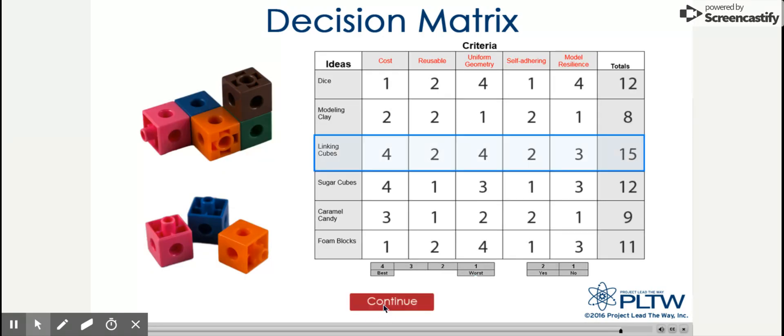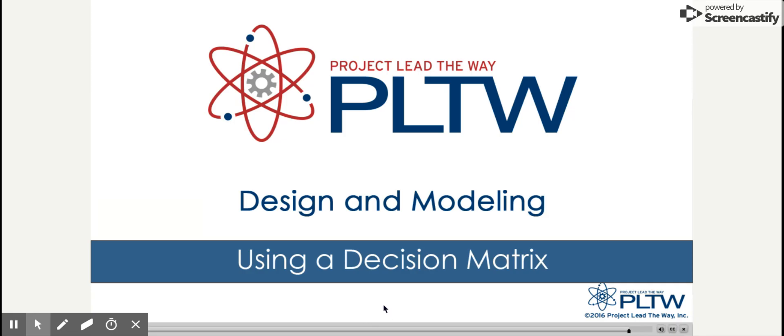The highest number in the chart is for linking cubes. Design decisions should be based on analysis and logic, not personal opinion. A decision matrix is one of those tools that can help determine the best solution to a problem.